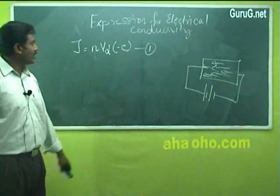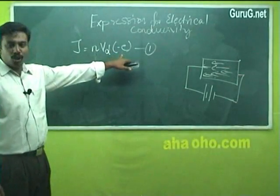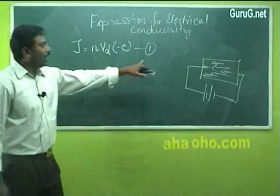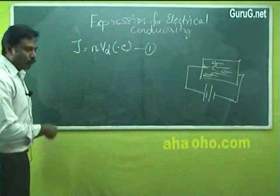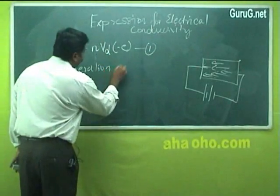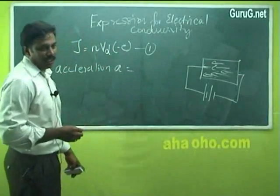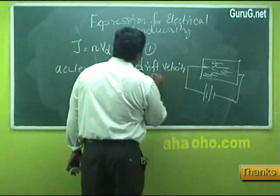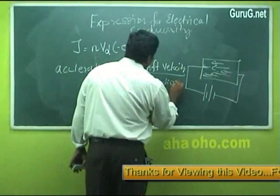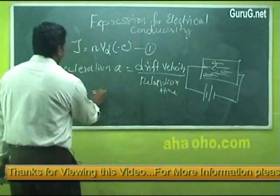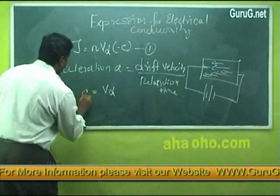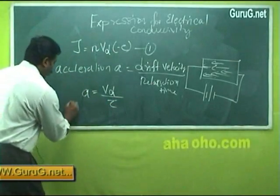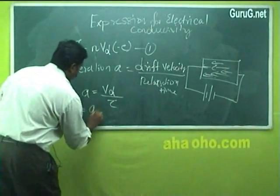The negative sign indicates that conduction is mainly due to electrons. Due to the application of the electric field, the electrons will experience an acceleration. The acceleration A is equal to drift velocity divided by relaxation time: A = VD / τ.